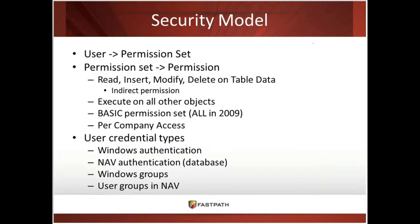One thing that comes with standard NAV permission sets is the basic permission set. That's going to grant you access to all objects except table data, systems, tables, and a changelog — just the base things that people would need to access NAV. It gives you a good starting place. You can also grant access per company. I worked at a company where we had 25 companies in one database, and not everybody should have access to all of them.